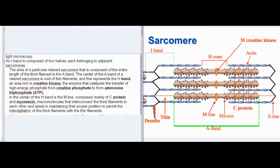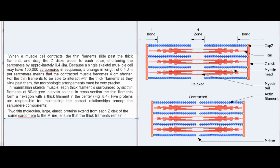The center of the A-band of a relaxed sarcomere is void of thin filaments, and this represents the H-band — an area rich in creatine kinase, the enzyme that catalyzes the transfer of high-energy phosphate from creatine phosphate to form ATP. In the center of the H-band is the M-line, composed mainly of C-protein and myomesin, macromolecules that interconnect the thick filaments to each other and assist in maintaining their proper position to permit interdigitation with the thin filaments.